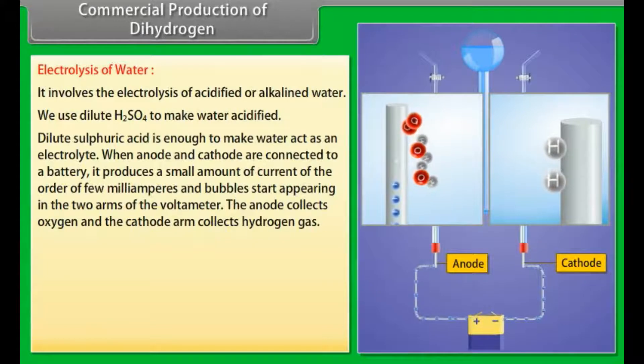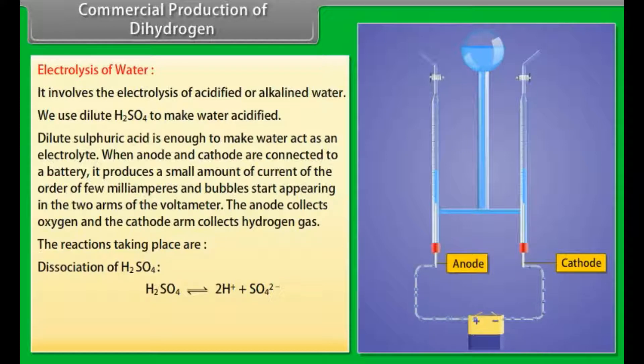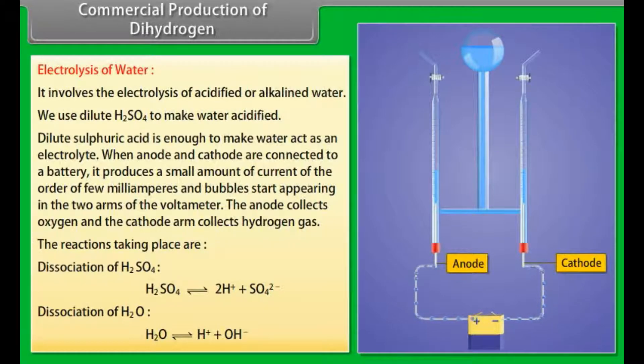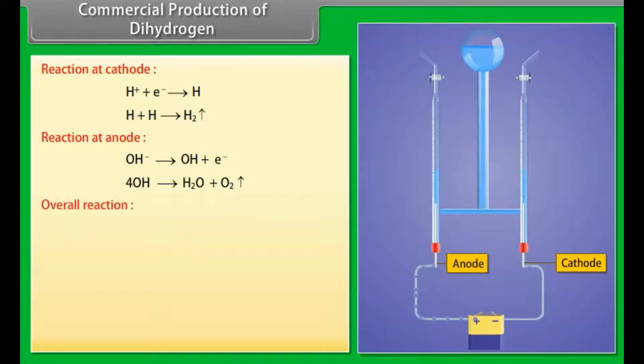The anode collects oxygen and the cathode arm collects hydrogen gas. The reactions taking place are: Dissociation of H2SO4 gives 2H plus plus SO4 2 minus. Dissociation of H2O gives H plus plus OH minus. Reaction at cathode: H plus plus electron gives H, H plus H gives H2. Reaction at anode: OH minus gives OH plus electron, 4OH gives H2O plus O2. Overall reaction: 2H2O gives 2H2 plus O2.